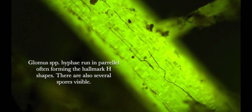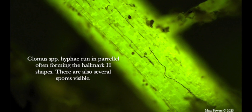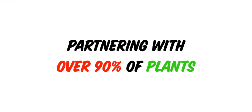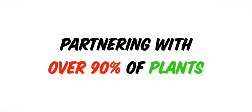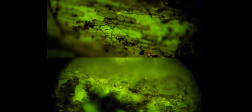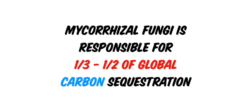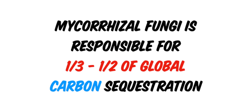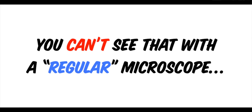It's really important to understand that they are bound to this context. They partner with over 90% of plants. And they are not visible — all of this that we're seeing here is usually not visible. Mycorrhizal fungi as a whole is responsible for a third to a half of global carbon sequestration, but you can't see it with a regular microscope.